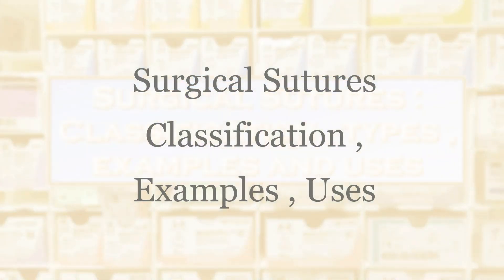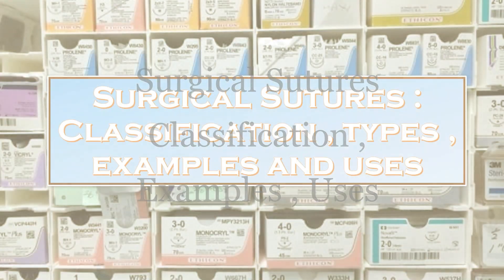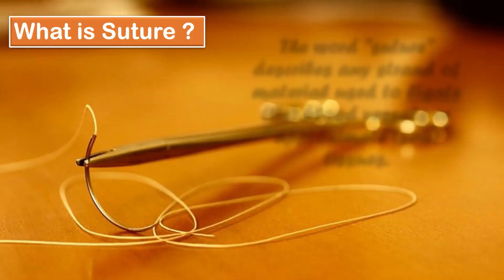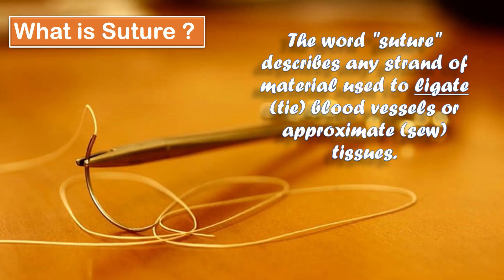The topic of our discussion today is surgical sutures, and we will study their classifications, types, examples, and uses in different types of surgeries. A suture is any strand of material used to ligate or tie blood vessels, or to approximate or sew tissues together.